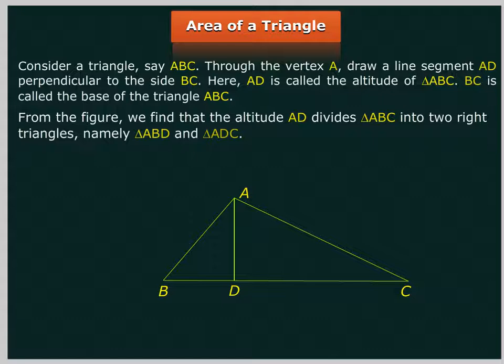From the figure, we find that the altitude AD divides triangle ABC into two right triangles, namely, triangle ABD and triangle ADC.